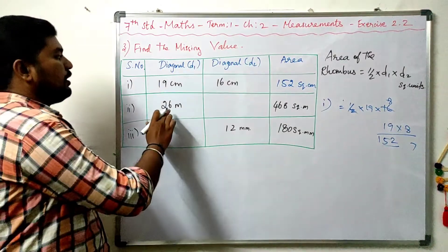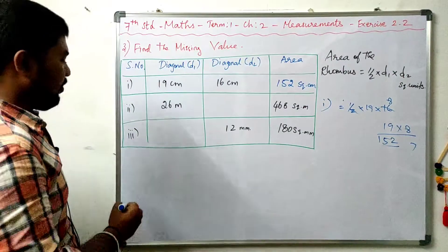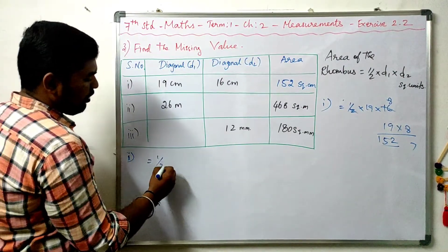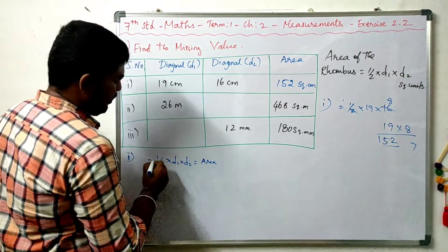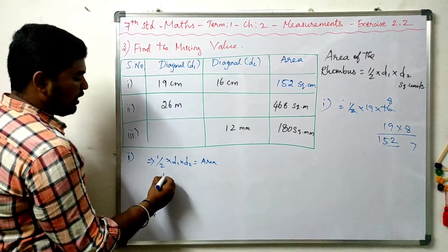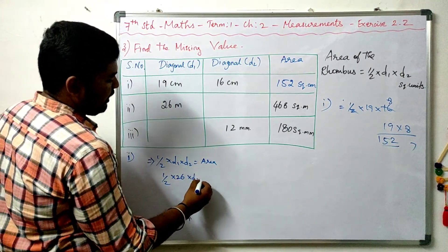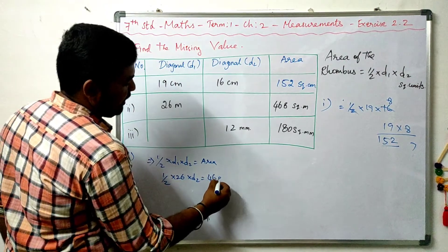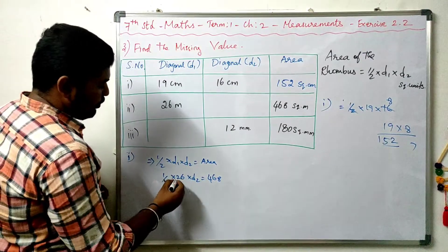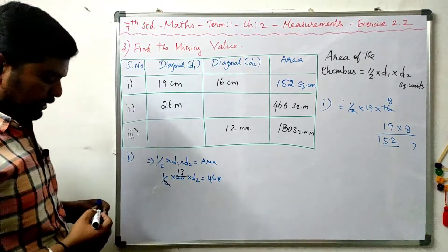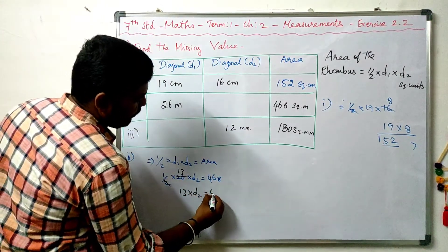Now looking at the second entry: one diagonal is 26 cm, and the area is 468. Using the formula: area = half into D1 into D2. So 468 = half into 26 into D2. Cancelling 2: 13 twos are 26. So 13 into D2 = 468.